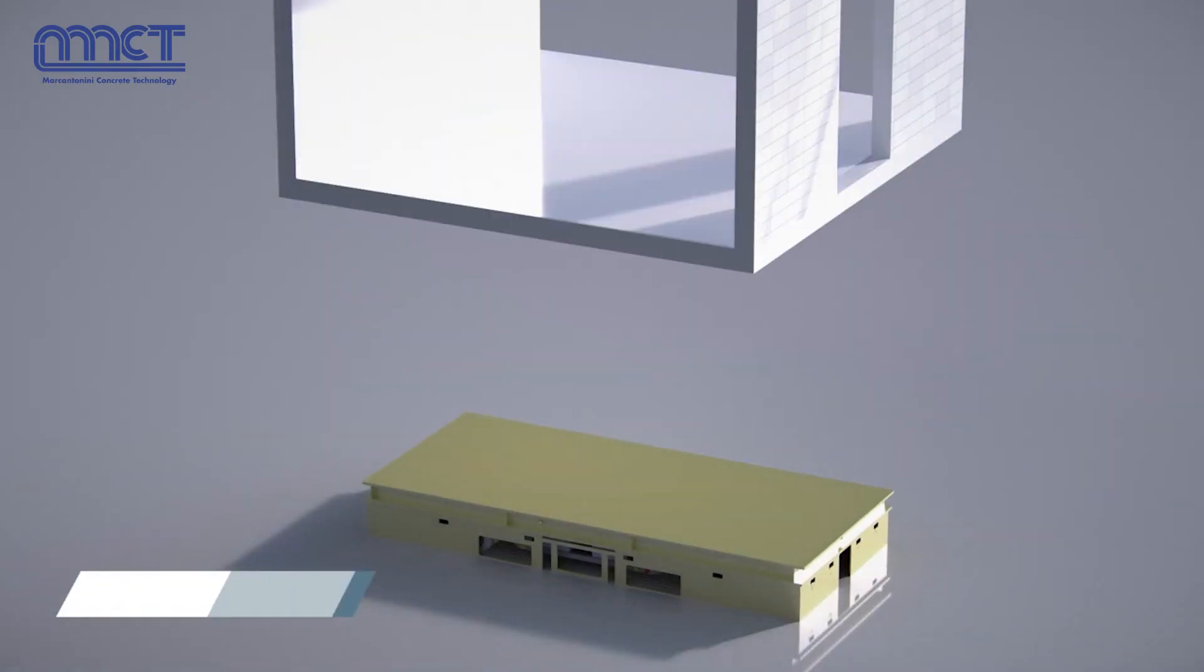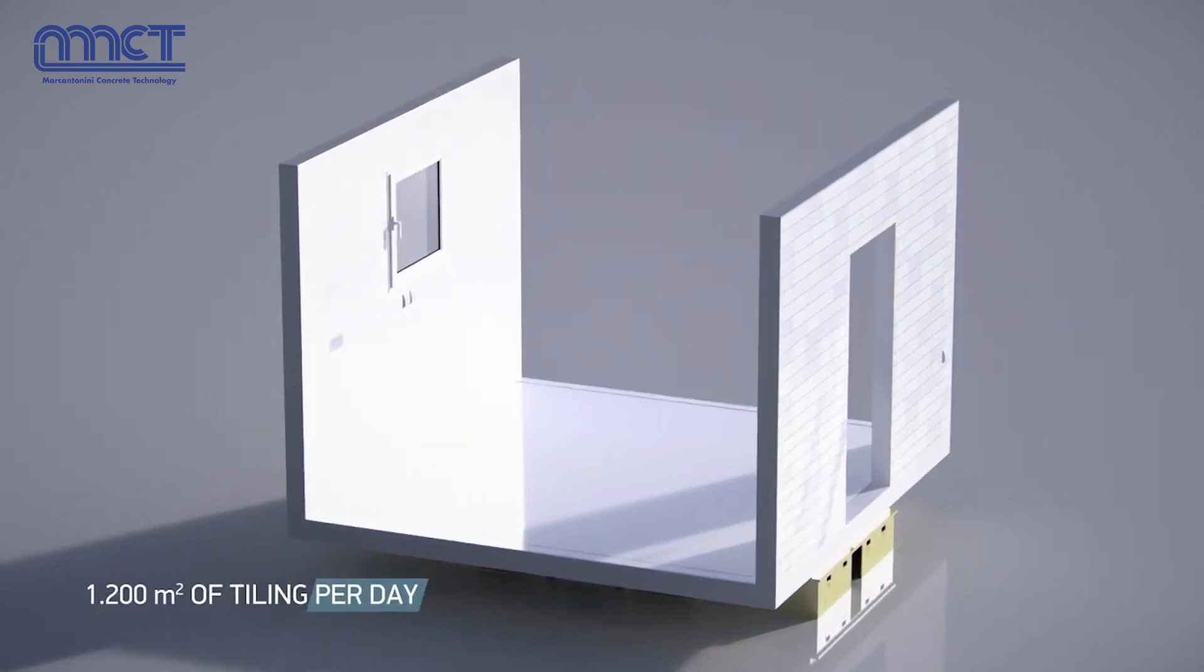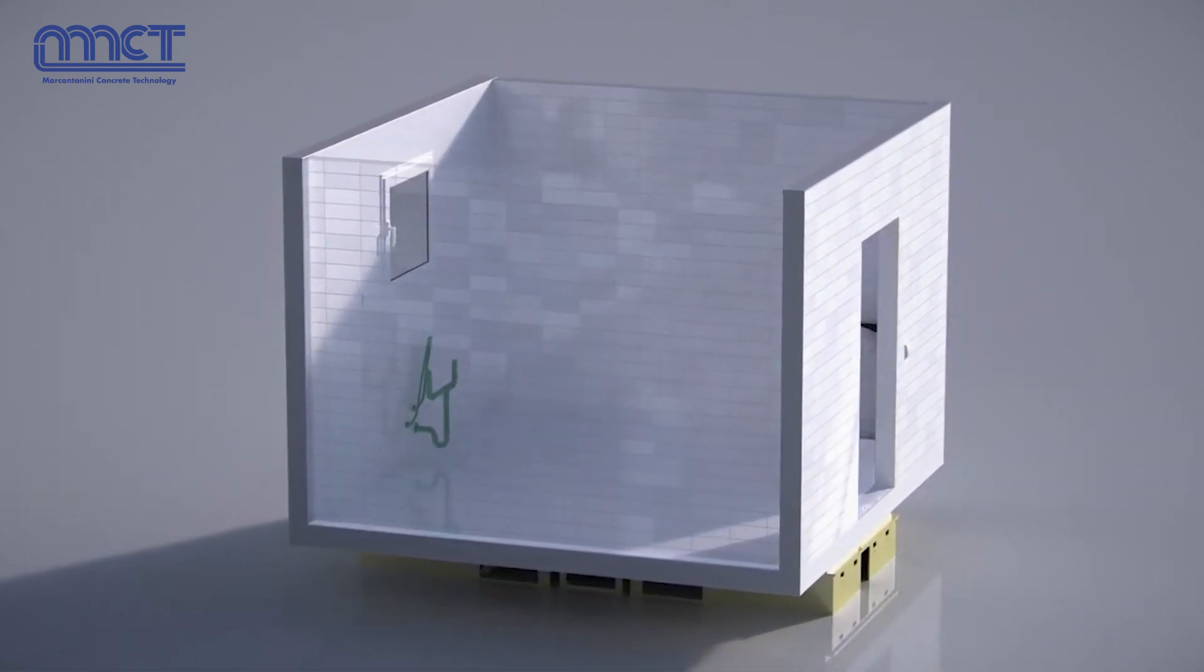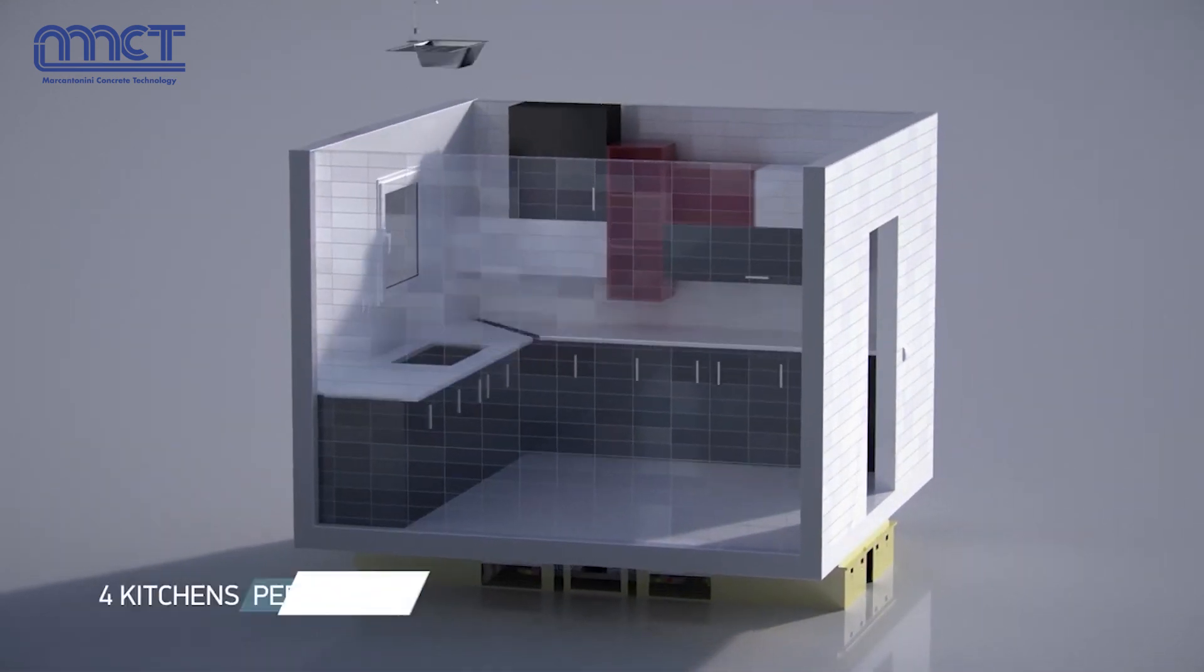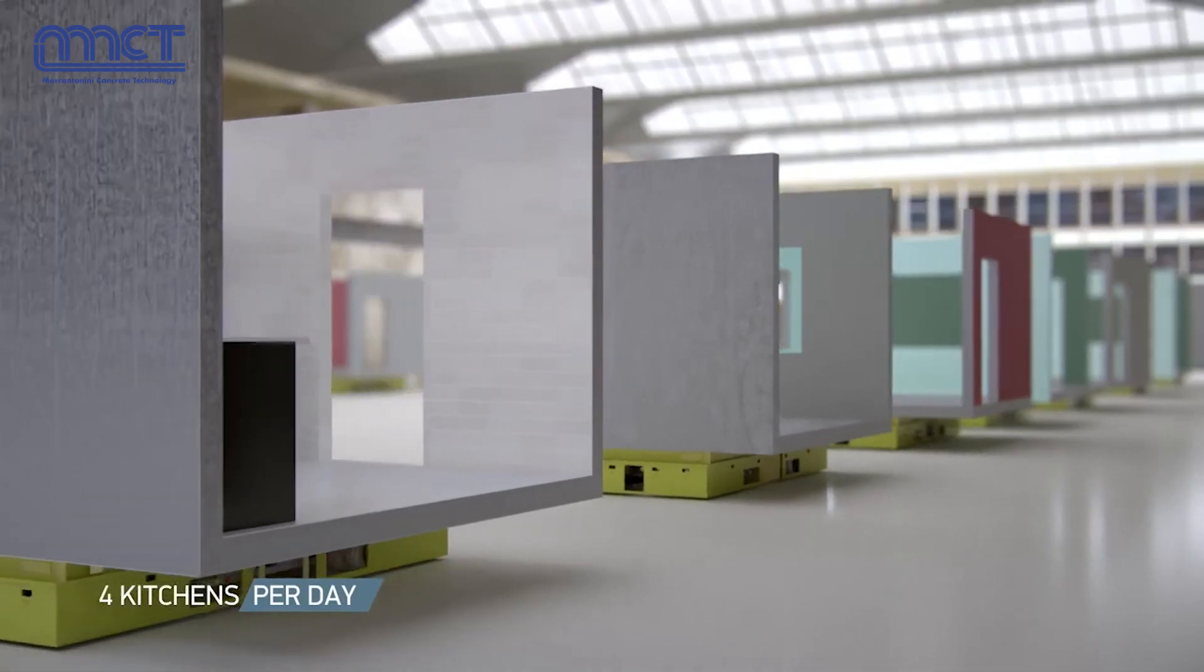The unit is later stripped and transported to the finishing area to complete electrical, plumbing, mechanical and floor wall finishes. The unit is then moved on to the storage conveyor.